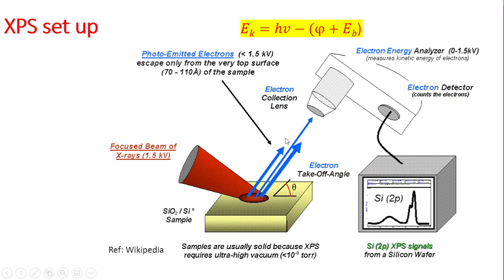The energy analyzer determines the energy of photoelectrons, while another detector counts the number of electrons or intensity at each energy. This data collected by the detector is converted into a plot of intensity versus binding energy.